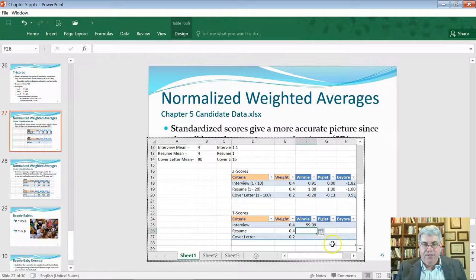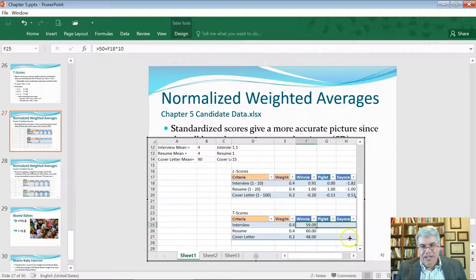And it has a Z-score of 59.09, and I want to calculate that for everybody or for all of his elements. So, his resume had a Z-score of 60, and his cover letter had 48 because it was below average. Now, let's do the same thing for Piglet. Now, I think we can just drag this over. I think we can do that for Eeyore, and all the way down here, too.